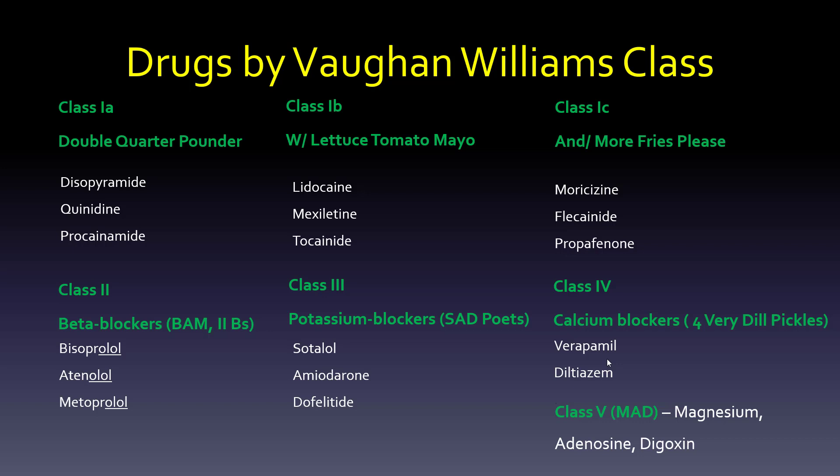And then class 5, the MAD group, is magnesium, adenosine, and digoxin. So if you have to remember all of them, this is a way to do it.